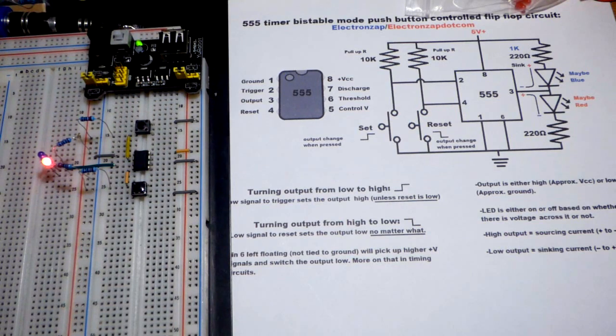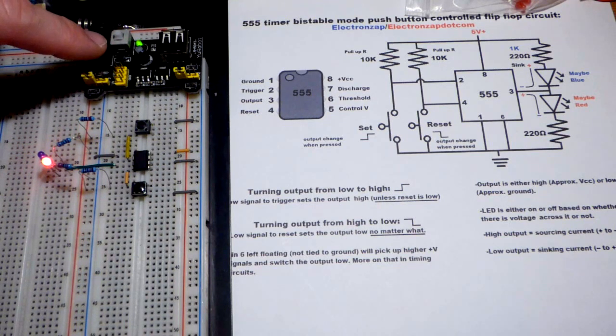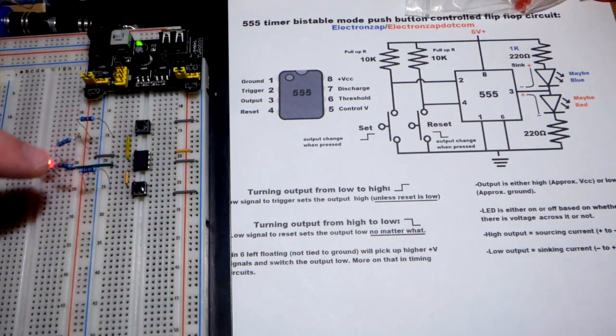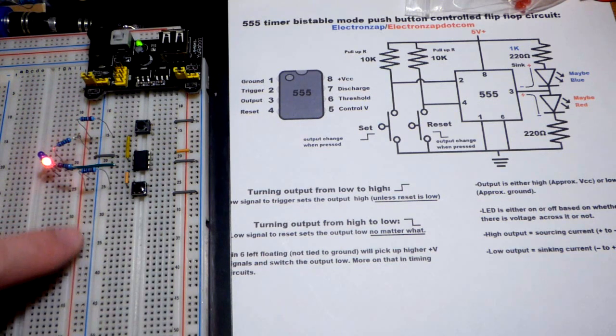If I hit the set button, now the red LED lights up. The output is high right now, so it's not as high of a voltage as the power supply, but it is as high as it can get, as close as it can get to the red rail here.